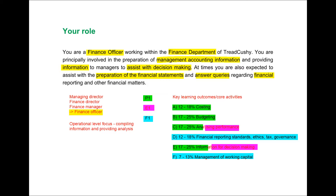You need to be absolutely comfortable with all aspects of the P1 syllabus. If P1 happens to be one of your weaker areas when it came to the E1, F1 and P1 exams, this is something you should definitely go over ahead of your OCS exam. The last part of CIMA's description of your role concerns assisting with the preparation of financial statements and answering queries regarding financial reporting — directly related to the F1 syllabus, which is core activities D and F. Core activity D has a weighting of 12–18% and concerns financial reporting standards, ethics, tax and governance. Core activity F is the smallest and relates to the management of working capital — but I'd consider it a key area regardless, as it's very likely to come up in some form.